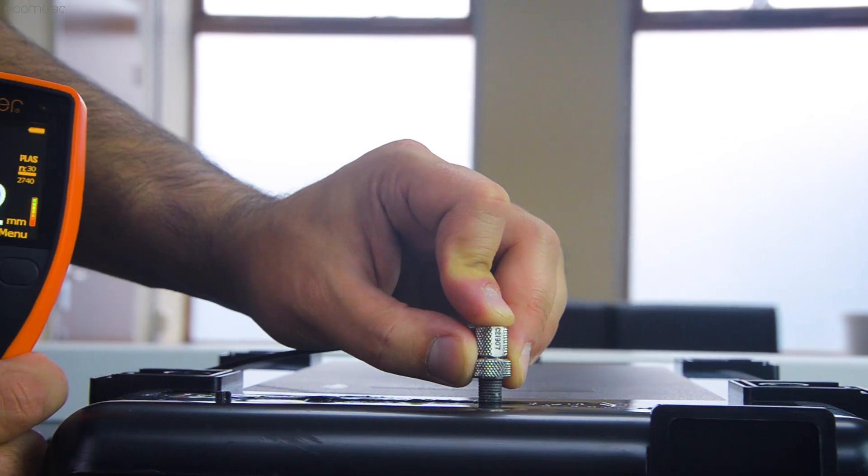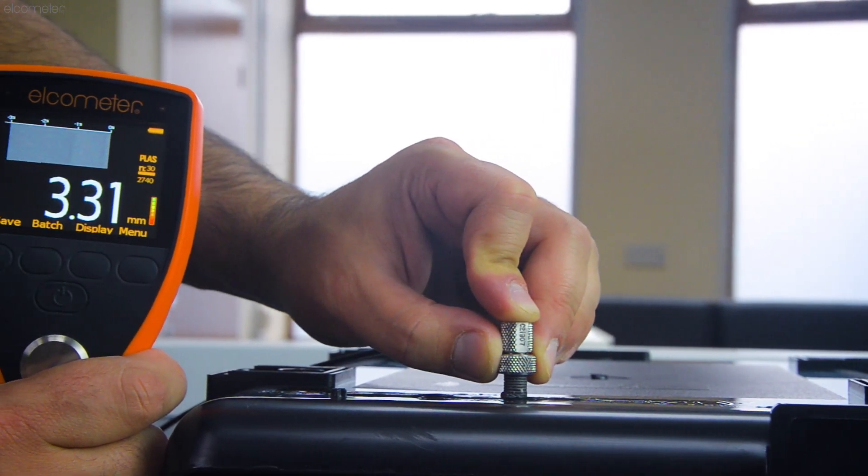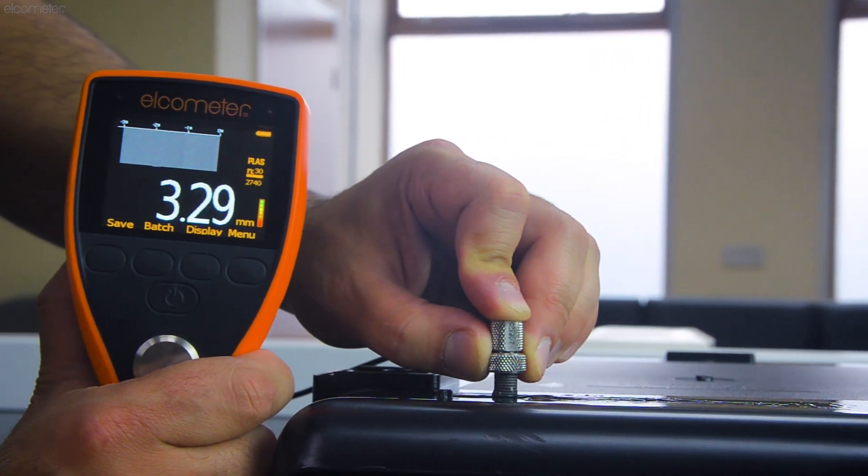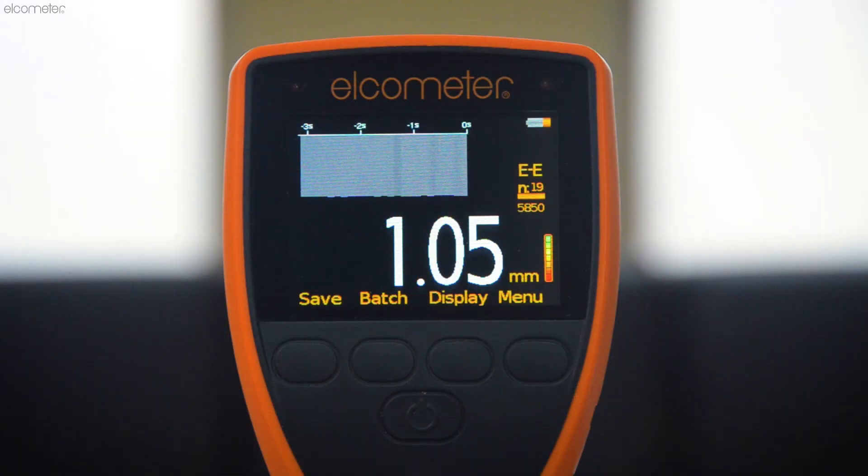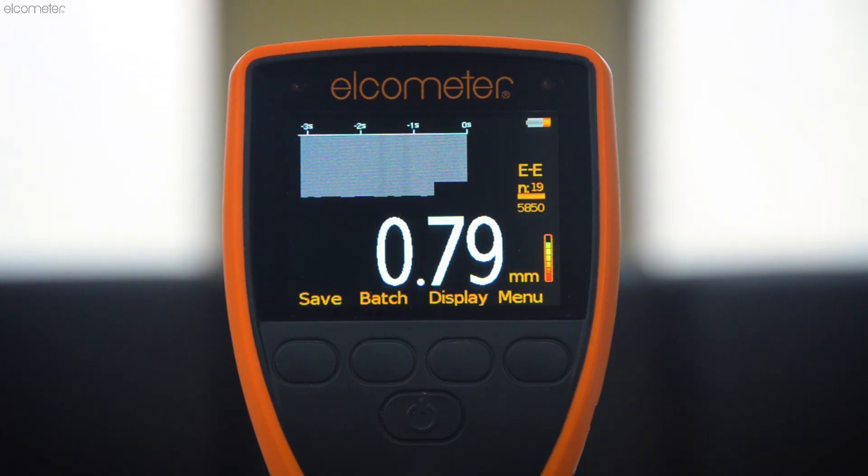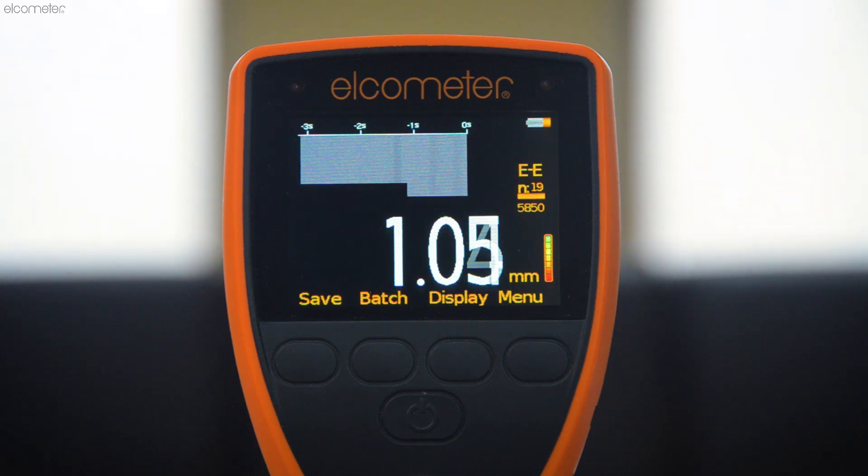The Elcometer PTG-8 is also equipped with B-scan mode, which shows any changes in the material thickness visually as you move across the surface, ideal for quickly identifying large changes in depth within the material.